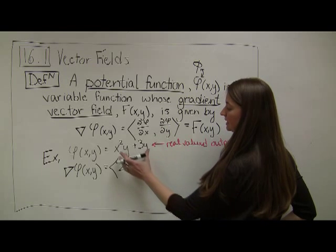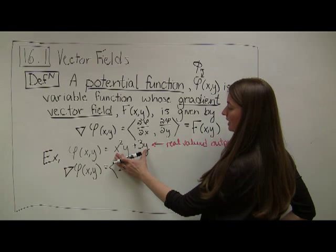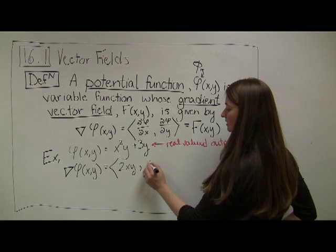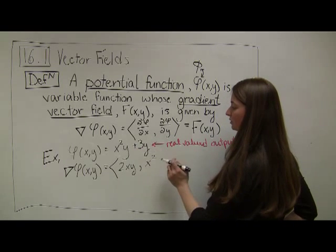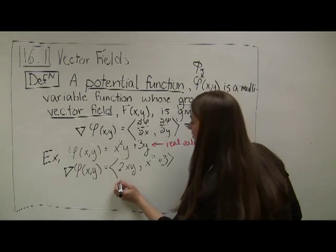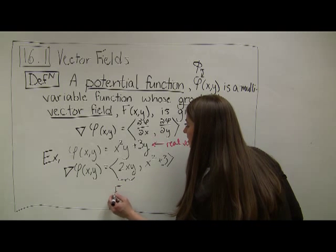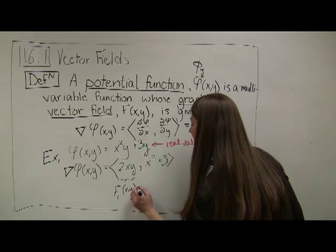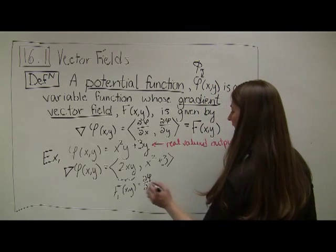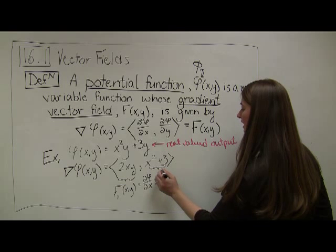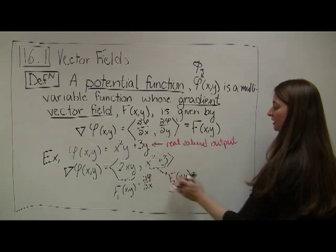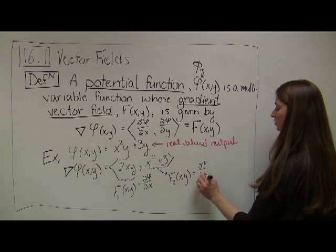My second component function comes from taking the partial derivative with respect to y. The derivative of the first term x squared y with respect to y treats x squared as the constant, so I'm left with x squared. The derivative of 3y with respect to y becomes 3. So f1 of xy equals the partial derivative of phi with respect to x, and f2 of xy equals the partial derivative of phi with respect to y.